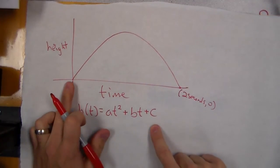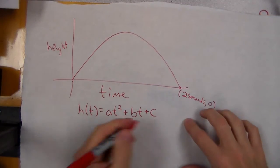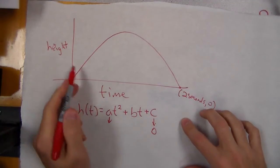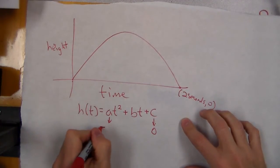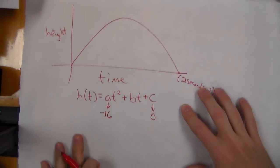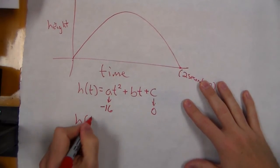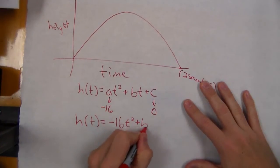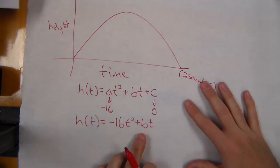We have an initial height of zero because we shot it off the ground, so c is zero. We know that a follows the gravitational constant whenever we look at time and height, and that's negative sixteen. So now h(t) = -16t² + bt, and we need to solve for b.